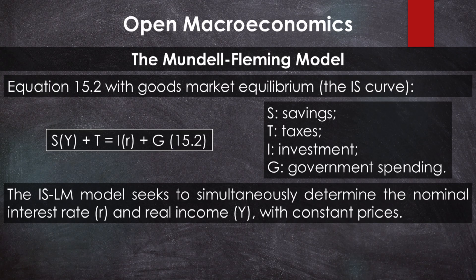And equation 15.2, which gives the equilibrium in the goods market — the IS curve — where S as a function of Y, T equals I as a function of R, plus G. S equals savings (a function of income), T equals taxes, I equals investment (a function of the interest rate), G equals government spending. Thus, the simple IS-LM model will simultaneously determine the nominal interest rate R and the level of real income Y, assuming a constant aggregate price level.